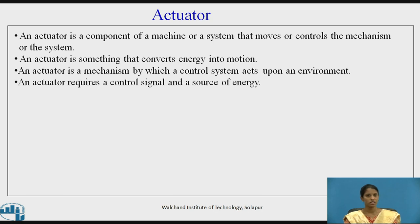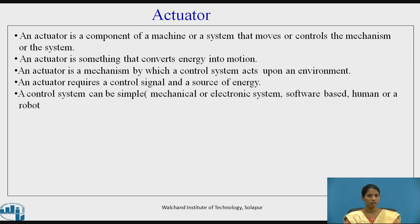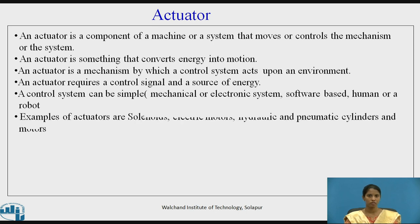An actuator requires a control signal and a source of energy. A control system can be a mechanical or electronic system, software-based, human, or a robot. Examples of actuators include solenoids, electric motors, hydraulic and pneumatic cylinders, and motors.